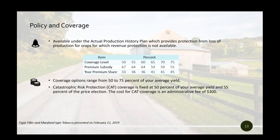Tobacco is insured under an APH plan, which means protection due to loss of production is what is provided. Revenue protection is not available for tobacco. Coverage options range from 50% to 75% in increments of 5% buy-up of your average yield. CAT coverage — catastrophic risk protection — is available for tobacco, fixed at 50% of your average yield and 55% of the price election.